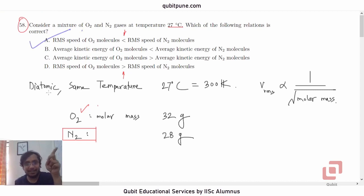And because average kinetic energy depends on temperature, is a function of temperature, because both the gases are at same temperature, average kinetic energy of molecules of oxygen and that of nitrogen molecules will be same. So B and C will not going to play any role.